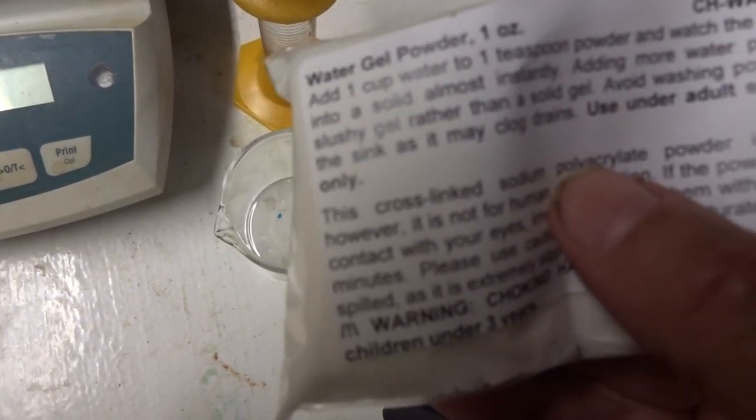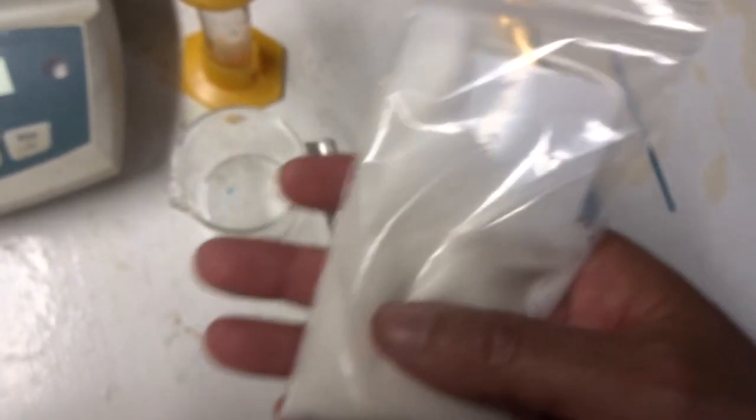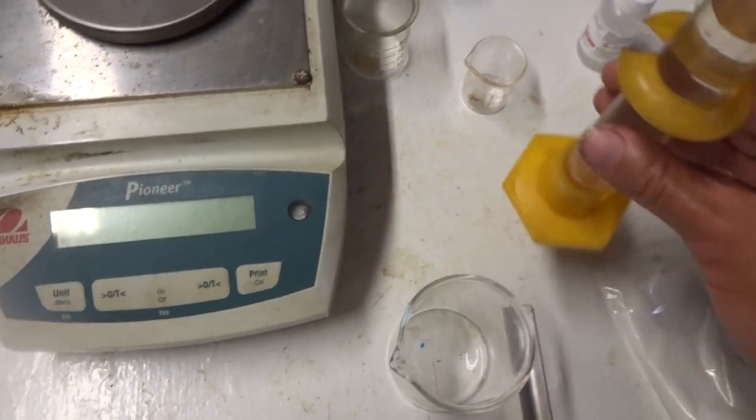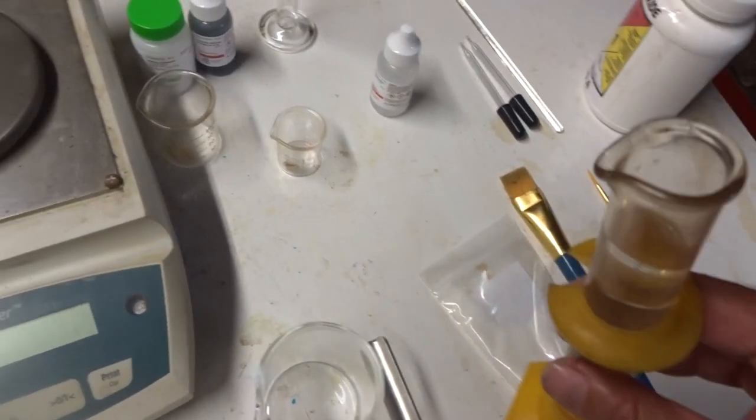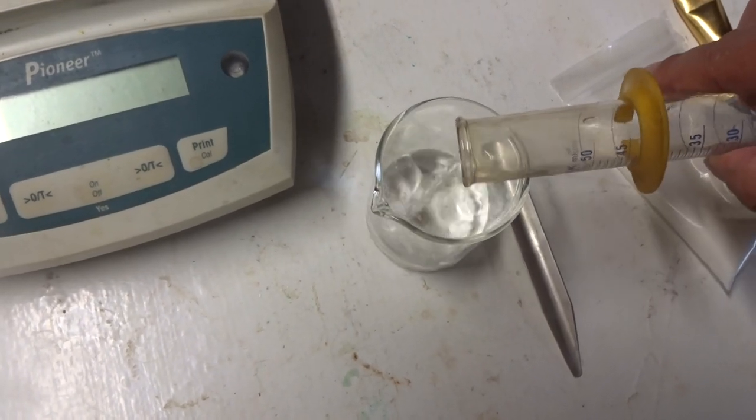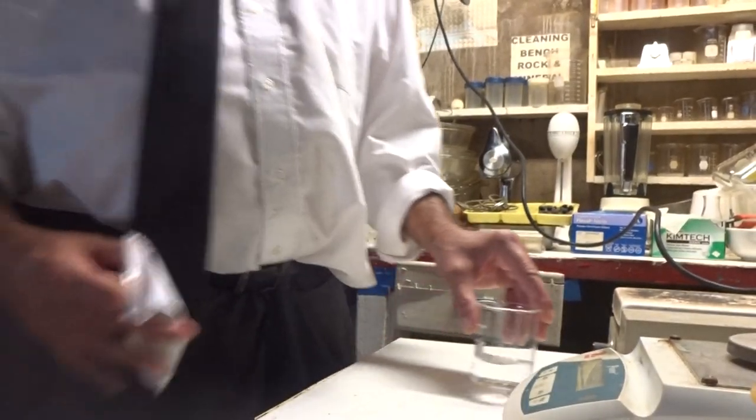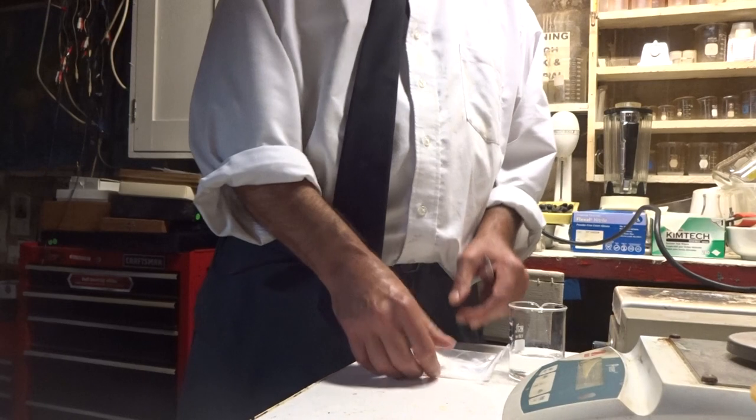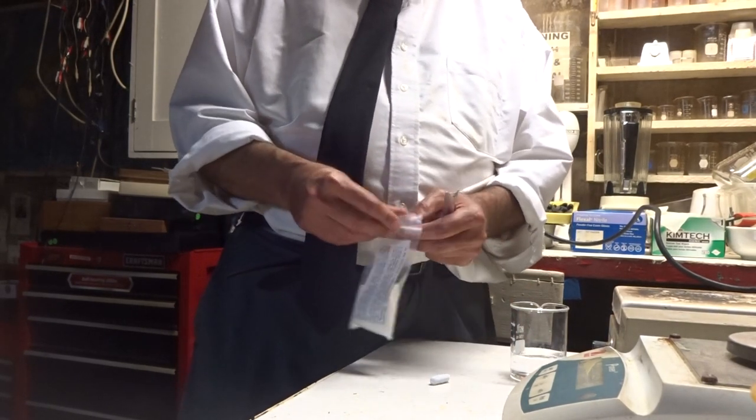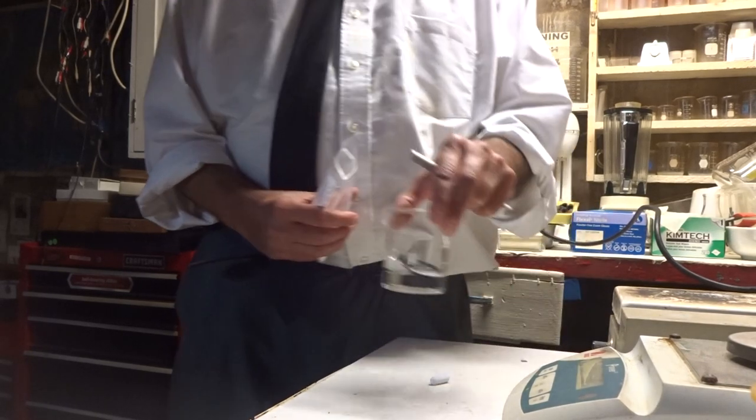I have a bag of sodium polyacrylate. It's a gel. And I have a graduated cylinder with 60 milliliters of water in it, which I'm going to pour into a beaker. So there's water in a beaker.